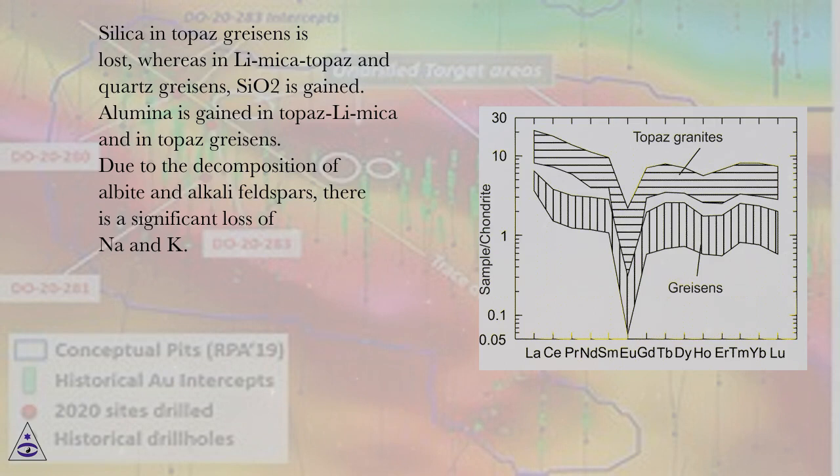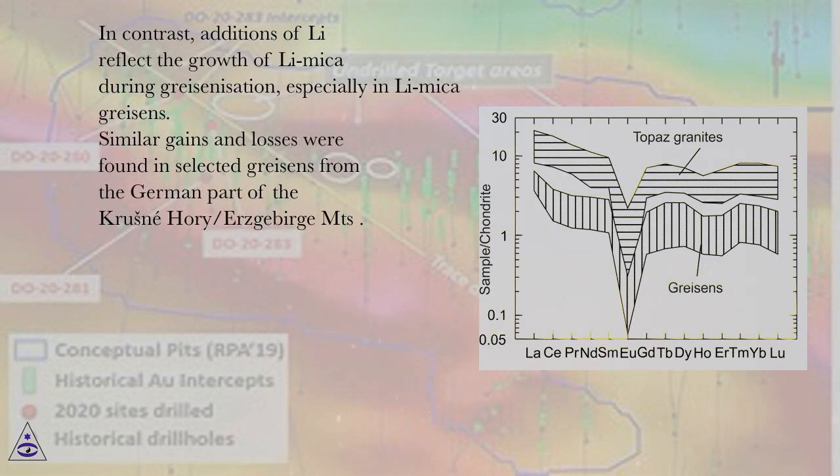Due to the decomposition of albite and alkali feldspars, there is a significant loss of Na and K. In contrast, additions of Li reflect the growth of Li-mica during greisenization, especially in Li-mica greisens.